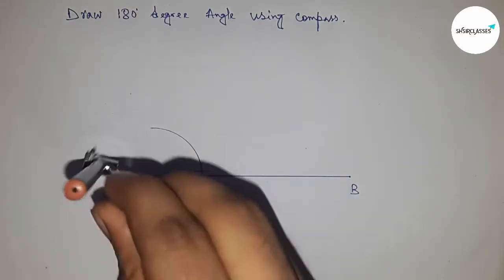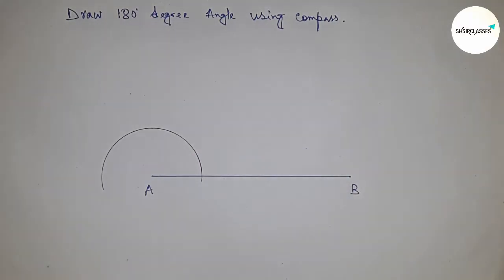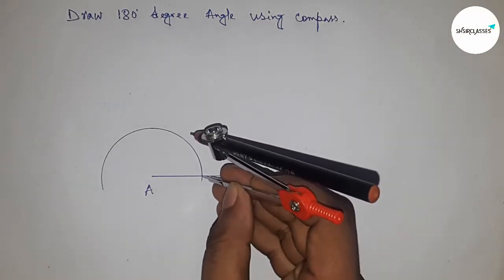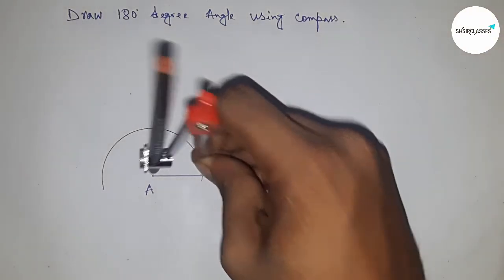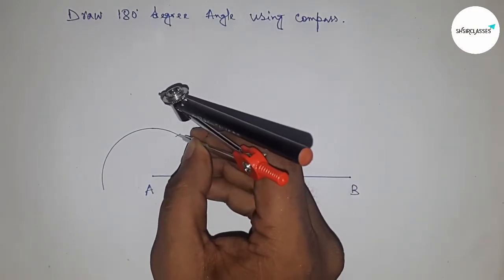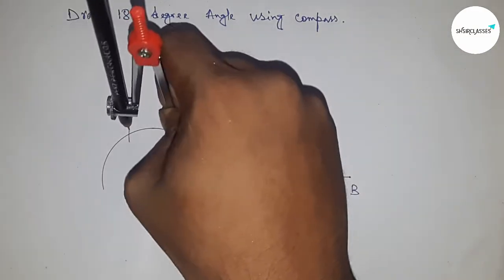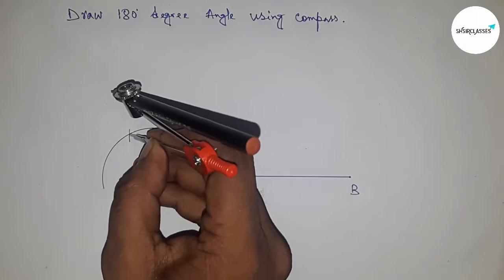any length and draw a curve this way. Now put the compass here with the same length and cut here. With the same length, put the compass here and cut here. With the same length, put